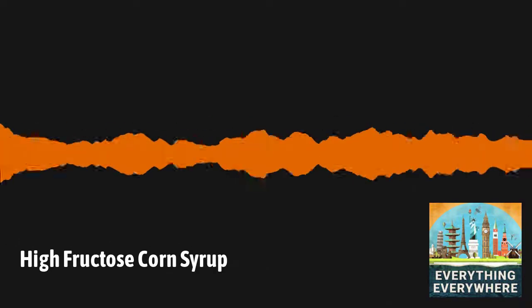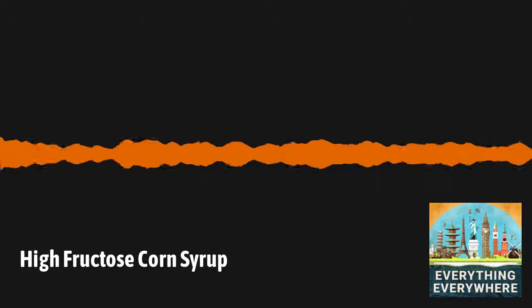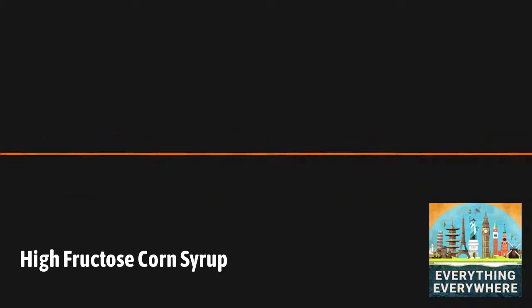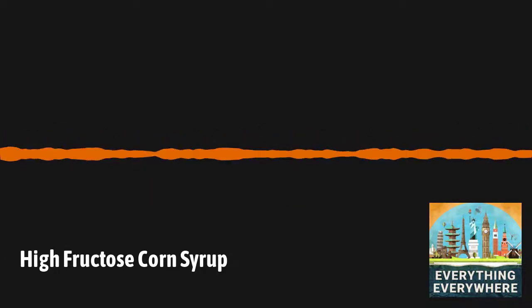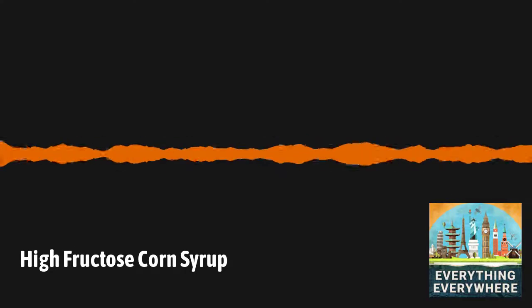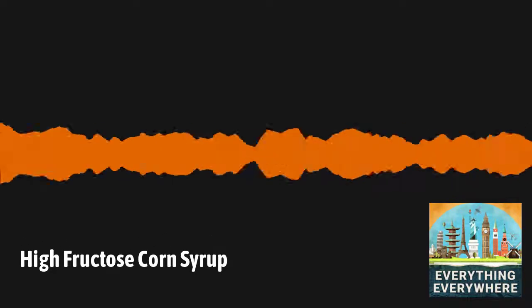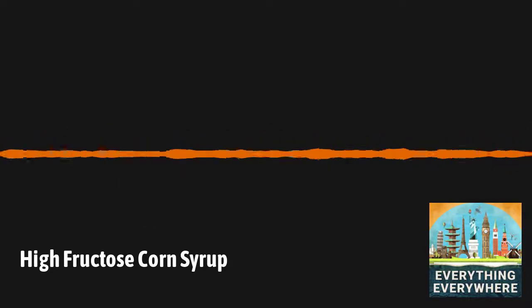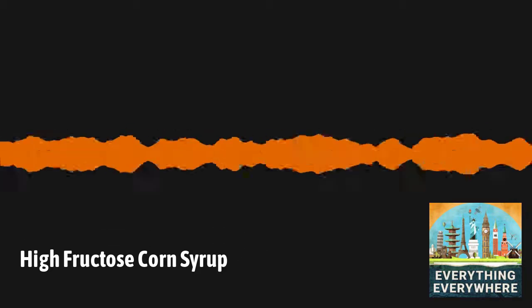This led two chemists, Richard Marshall and Earl Cooey of the Clinton Corn Processing Company of Clinton, Iowa, to develop a process that could turn glucose found in corn starch into fructose. The process they developed wasn't something that could easily scale up to mass production, but it showed enormous potential.